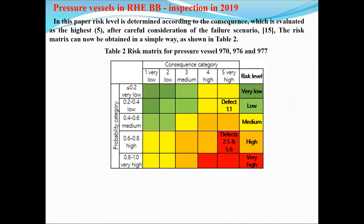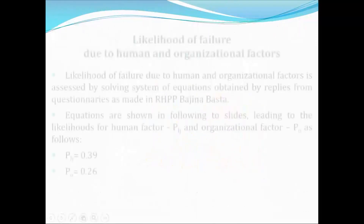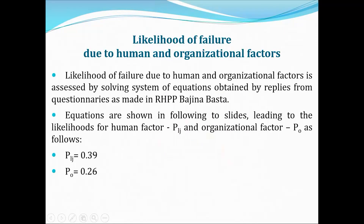Just to say that the risk topics for these three defects are as follows. The consequence category is very high, so defect 1 is still in the yellow region, which means medium risk, but these two are in red — and especially they will become even more red once we add the risk from the human and organizational factors.